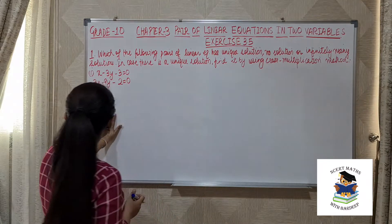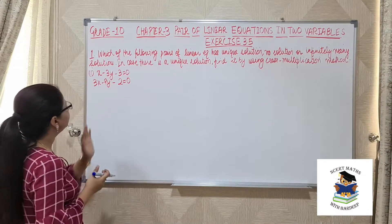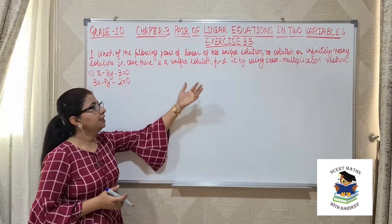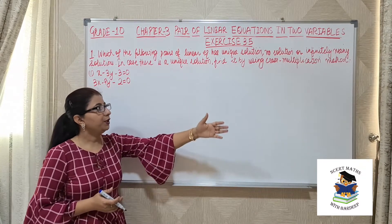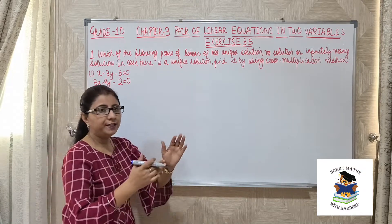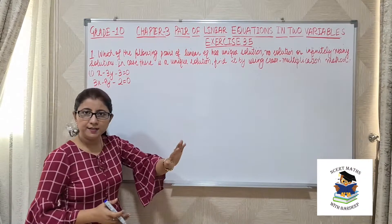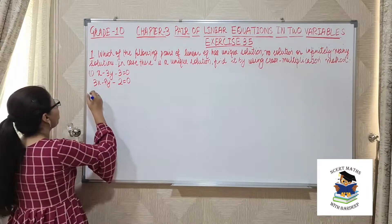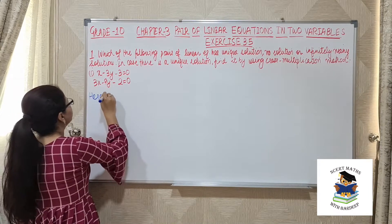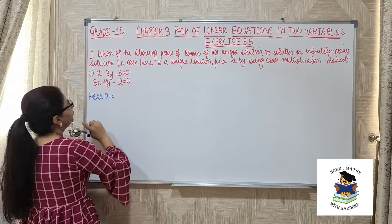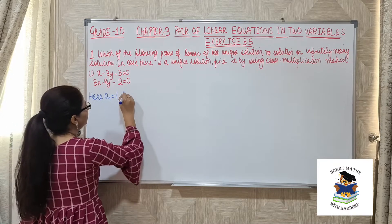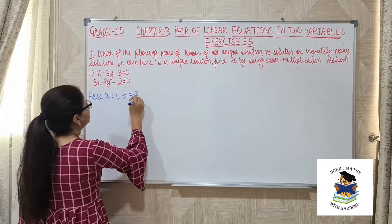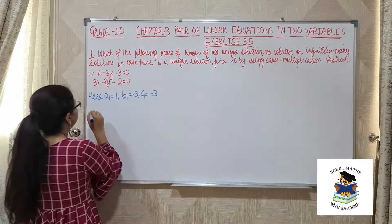So let's start. Our first pair of equations is given to us. Whenever we need to check whether the given pair has a unique solution, no solution, or infinitely many solutions, always make sure the right-hand side is 0. If not, make it 0. In our case it is already 0, so we can start. Here, a1 is the coefficient of x, so a1 is 1. b1 is minus 3, and c1 is also minus 3.